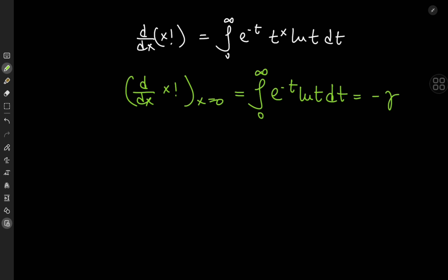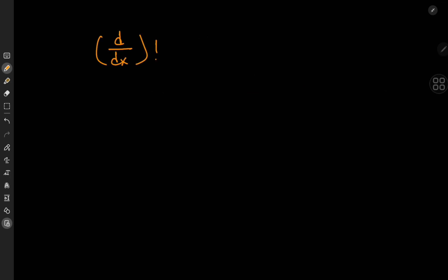Now for the other question, what does it mean to take the derivative operator and factorial it? To tackle this problem we're going to make use of some linear algebra. We know that the derivative operator is a linear transform, so that means we can come up with some kind of matrix representation depending on the vector space we're working in.